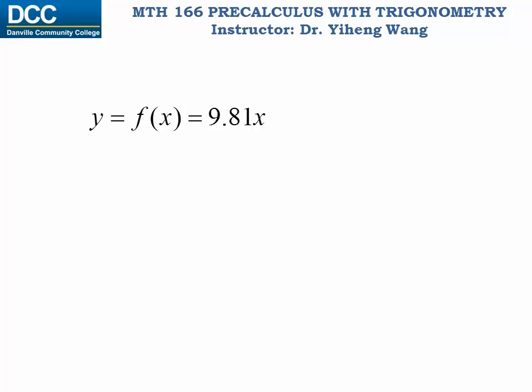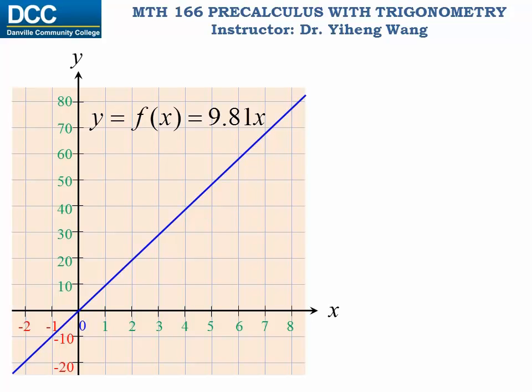So for this function, x can be any real number, and as a result y can be any real number as well. If we sketch its graph, you can see that the graph would extend beyond the background. Therefore, the domain for this function is x can be any real number.